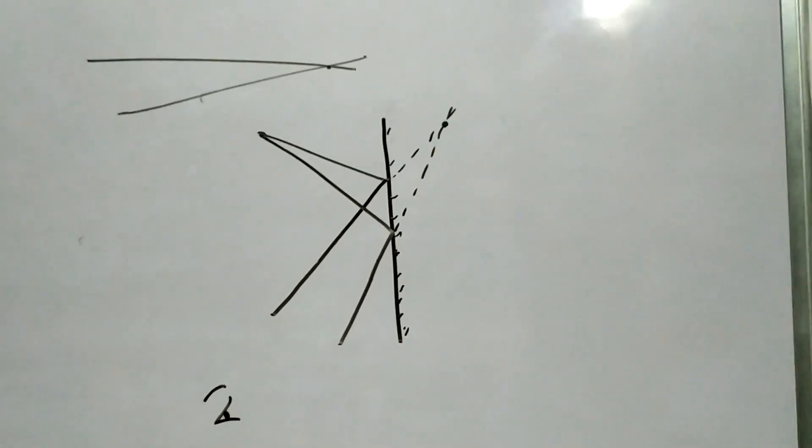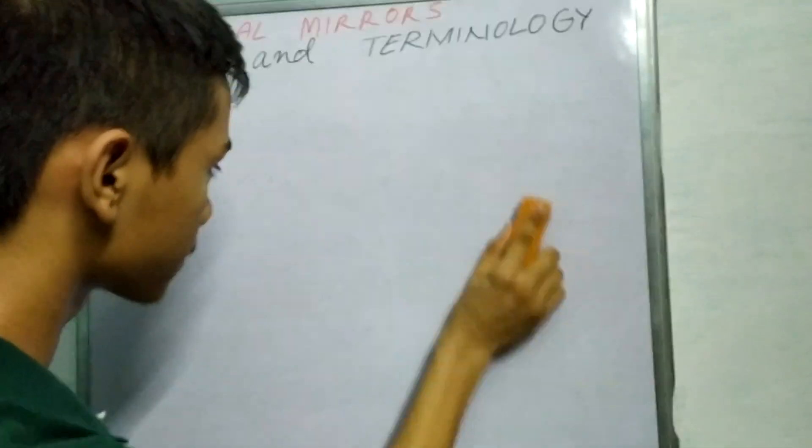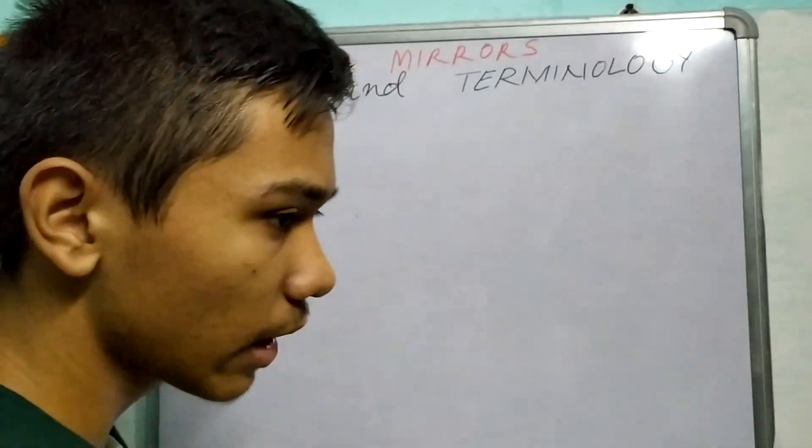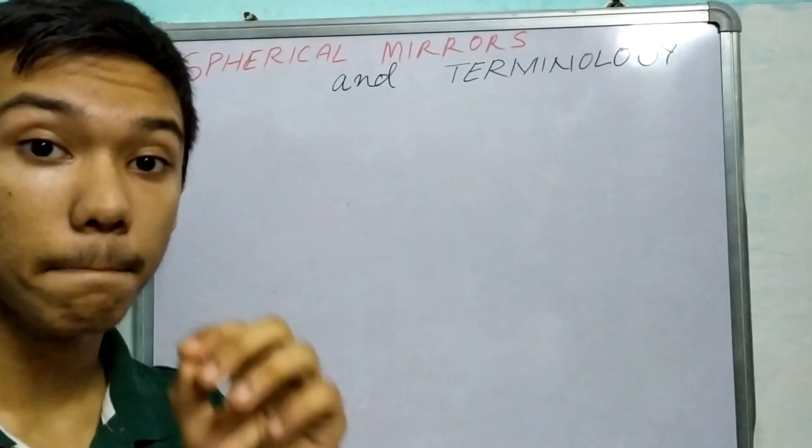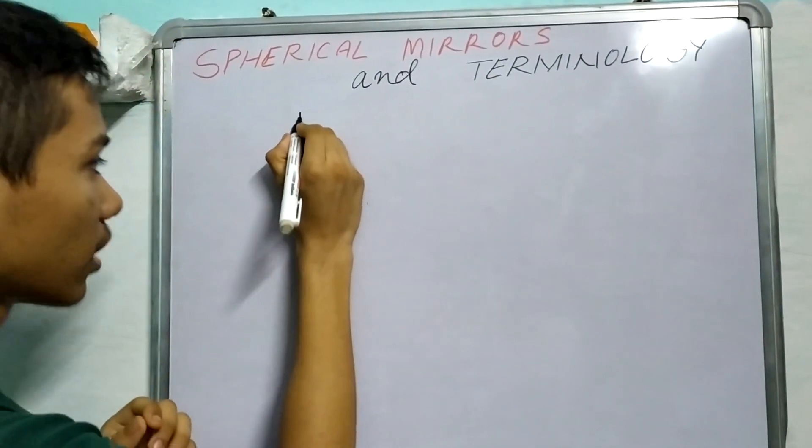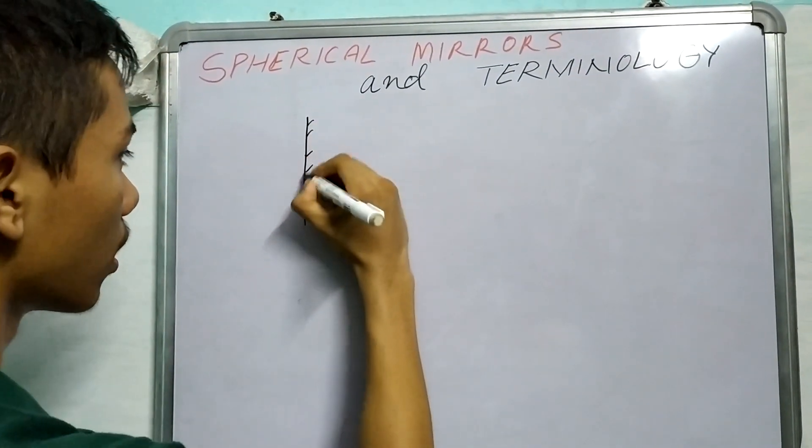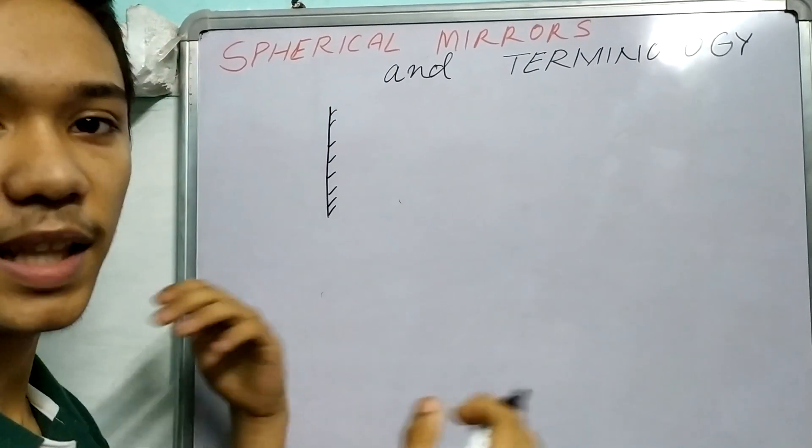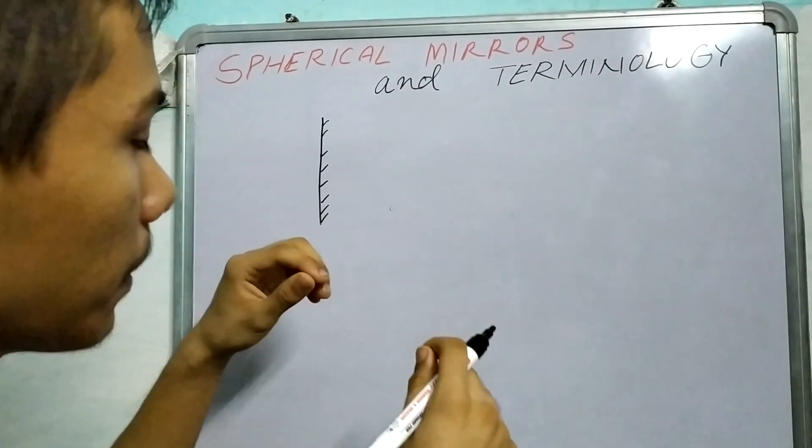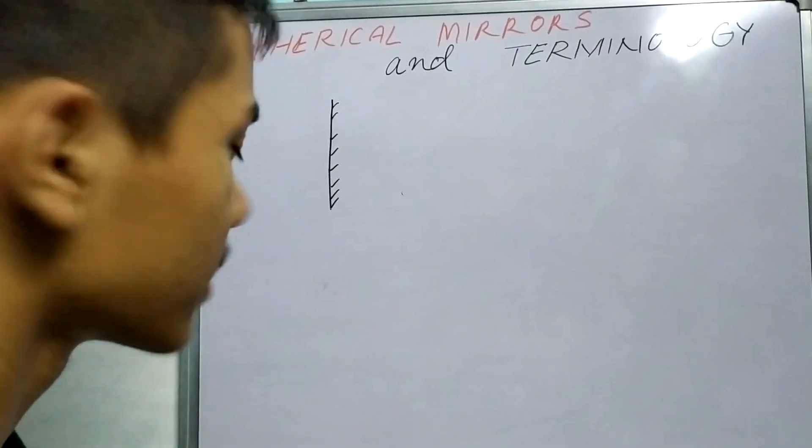This is called a virtual image. So, that's what I was talking about images. Now, what have we dealt with? We have dealt with a mirror, a plain mirror, a straight mirror. Now, what will happen if we play with this mirror? What if we bend it? Is this possible?